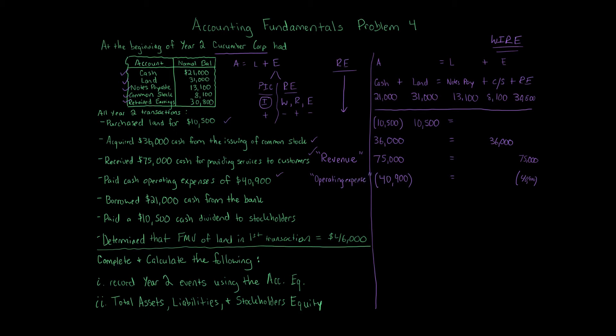Transaction 5: Borrowed $21,000 cash from the bank. Cash goes up by $21,000. Notes Payable goes up by $21,000, because now we owe the bank $21,000. An increase in a liability says the business owes money in the future. That's everything in that transaction — the accounting equation balances.